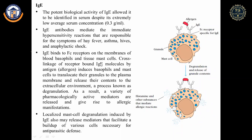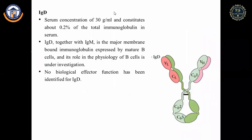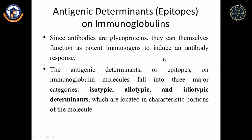IgD has a serum concentration of 30 μg/mL, constituting about 0.2% of total serum immunoglobulin. Its role is not yet clearly identified, but it is present on B cells as an antibody. Regarding antigenic determinants on immunoglobulins: since antibodies are glycoproteins, they can themselves function as immunogens to induce an antibody response when introduced into another individual.